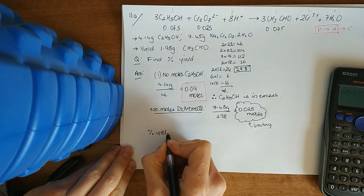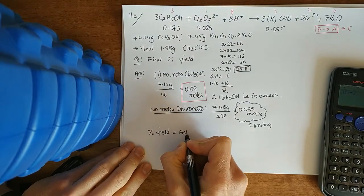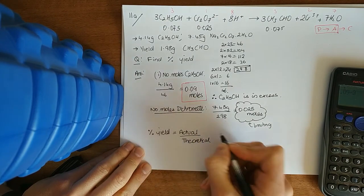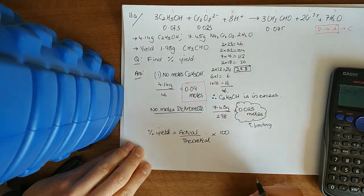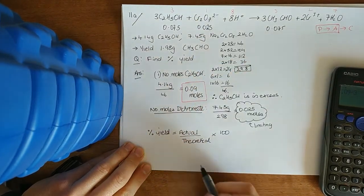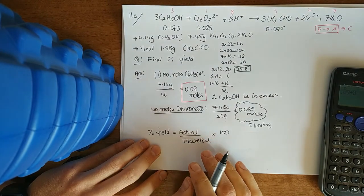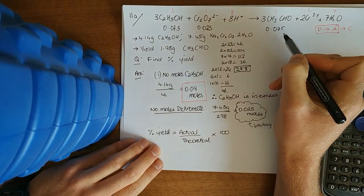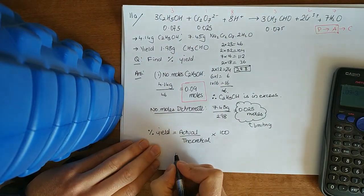And then to find the percentage yield. Work with the formula that you've got. That's actual yield over what you should get in theory, if there was no loss of product in the experiment. To make anything a percent, times it by 100 or 100 over 1. Now, there's my actual yield. I've got to work out my theoretical yield. So, your theoretical yield should be bigger than your actual yield. So, you've got your moles. Go to mass in grams. Multiply by the relative molecular mass.